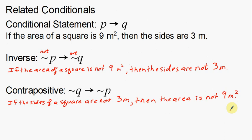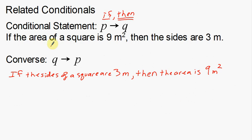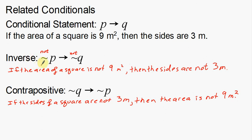To recap: we have three vocabulary words. A conditional statement is your if-then statement. A converse is when you take the hypothesis and the conclusion and switch them around. The inverse is when you don't switch them around but you take the opposite — adding the word 'not' into your conditional statement. And the contrapositive is a combination of both your converse and your inverse — you're saying the opposite and switching them around. Those are what we call the related conditionals. I hope this video was informative.